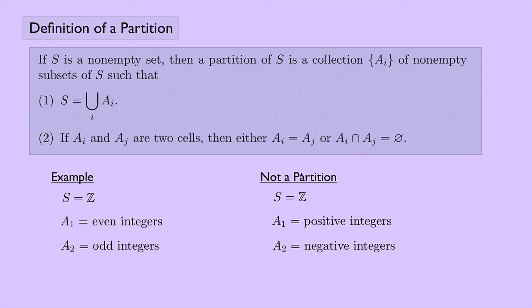The reason that this is not a partition would be because condition one is not satisfied. Because if you were to take the union of A1 and A2, you would not get S. You'd get everything but zero. Notice that these two sets are disjoint, so condition two is satisfied. But in order to be a partition, it has to satisfy both conditions one and two.